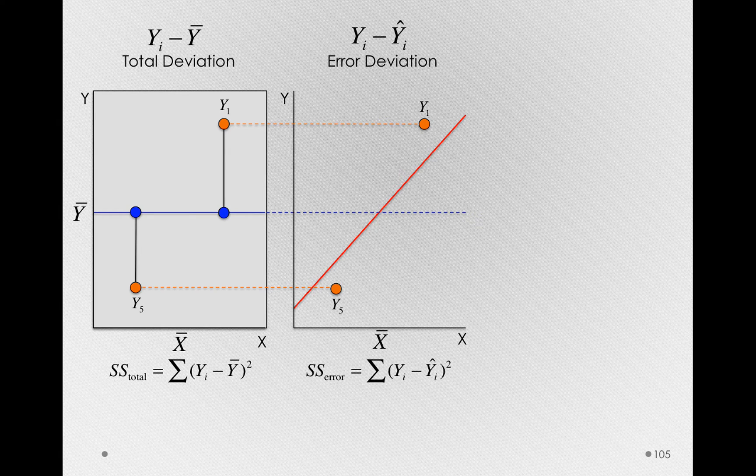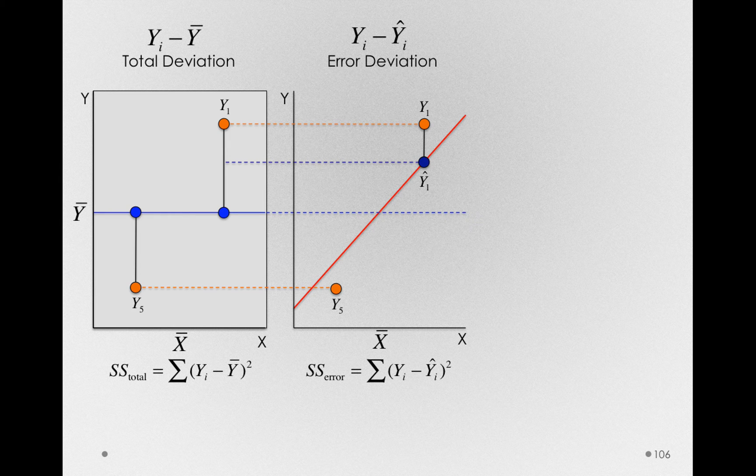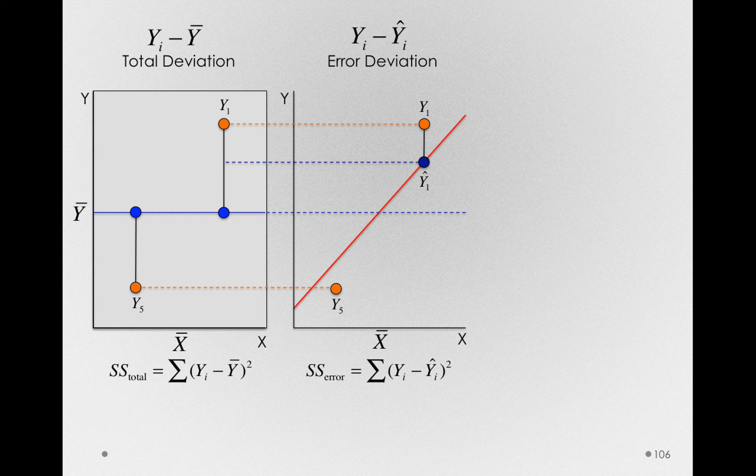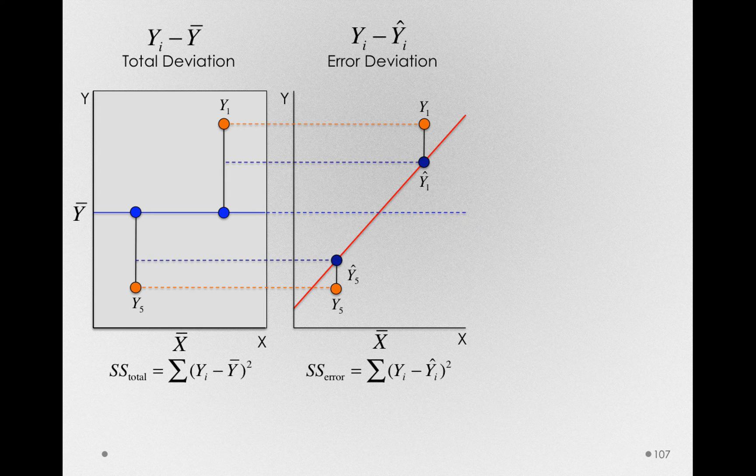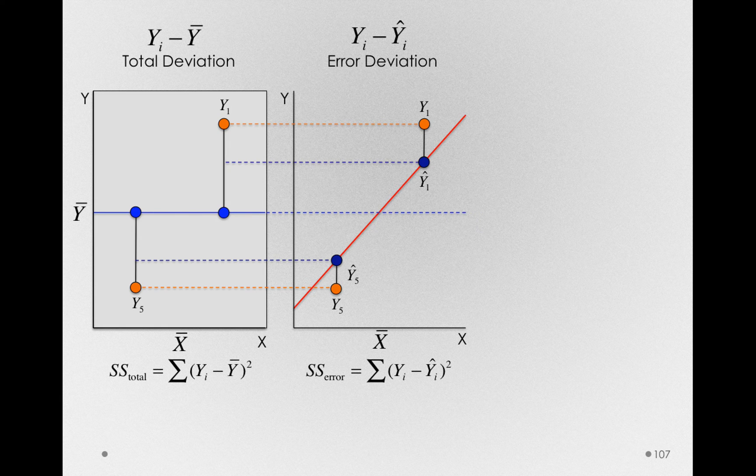So the error deviation for Tom is going to be the difference between Tom's actual score and what is predicted for Tom. That is, when this line is at 11 hours of studying, what would it predict an individual would get on the final exam? For Gloria, Gloria's deviation is, just like it is for Tom, a deviation between her actual score and what is predicted for her on the basis of the number of hours she studied.